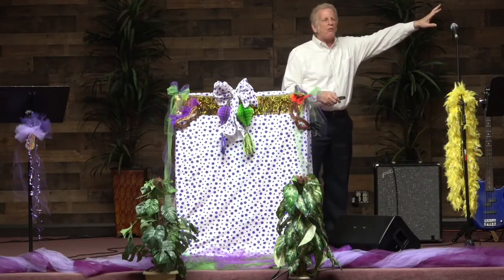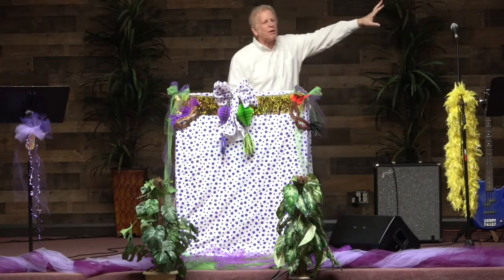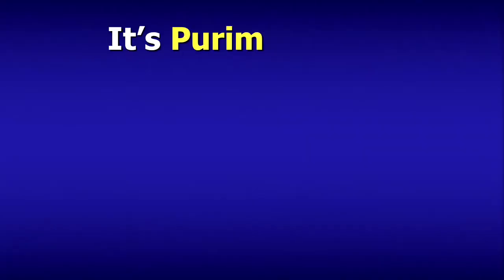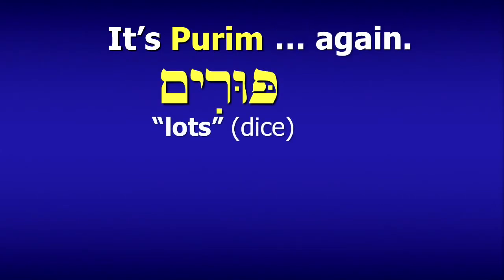Purim — for those who don't know, the word Purim actually means 'lots' or 'dice,' the kind of things you roll to make a decision on something. That's what the name comes from. They rolled the dice to select a date on which to kill all the Jews, and it came out to the 14th of Adar.